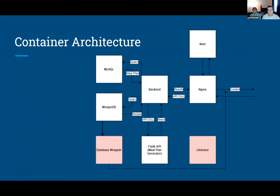Now I'll talk about the container architecture. Rather than a traditional LAMP stack for a web app, we went with a microservice architecture model, meaning every single aspect of our project is in its own Docker container. First we have an Nginx reverse proxy that forwards requests from users on port 80 when they want web content. That forwards them to our Next.js Node.js container that compiles our React code.